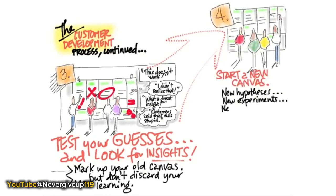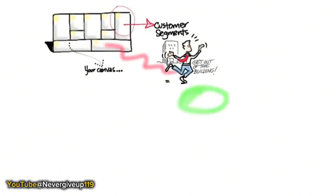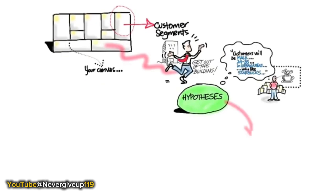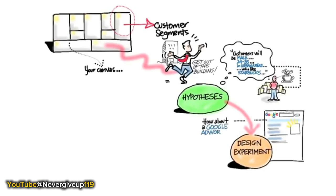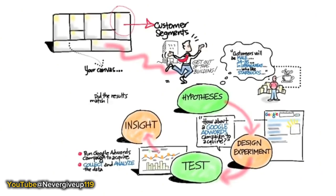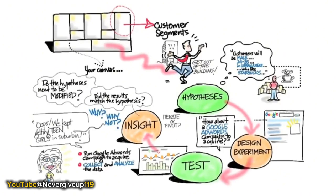As we find new insights, we actually change the canvas - marking it up and saying, 'We thought the customers were these kinds of people? Holy cow, they're actually these kinds of people.' For example, a hypothesis might be: customers will be male, 24 to 35, living in urban areas. Then we design experiments - maybe a Google AdWords campaign, or for a physical product, go meet them personally. Run tests, analyze the data, and understand: did the results match the hypotheses? If not, understand why your initial hypotheses were wrong - it's the 'why' that gives you insight. You might find you kept getting teen girls in suburbia, who are enthusiastic and actually trying to figure out how to buy your product right now.